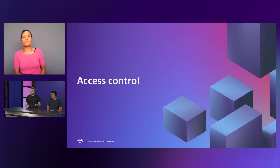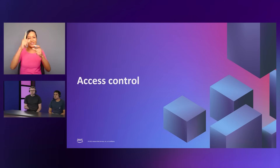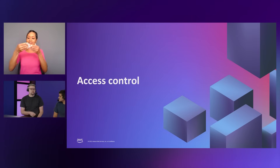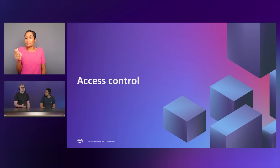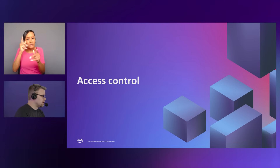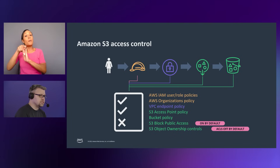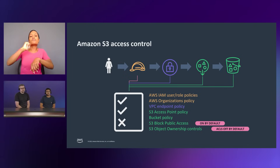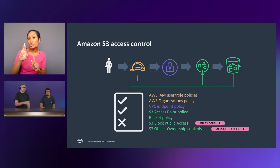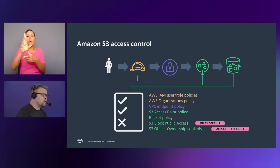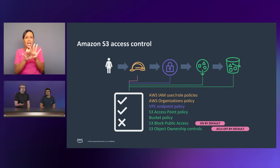Access control is what people traditionally think of as security — the gate code, the key for a door, the card that gets you through a badge reader. In AWS, that gate is enforced by policy. This policy language is the same across all of our services, and you can put policy restrictions in place wherever it makes sense for your enterprise — at the specific user or role level, at a higher level within your organization, on your network, or on your S3 resources. We support these policies at every one of those levels through AWS IAM, AWS Organizations, and within S3.